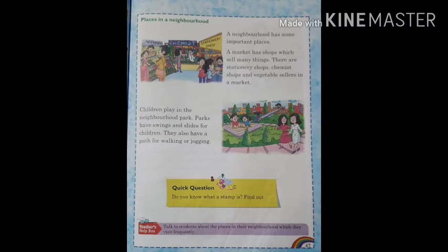Another important place is the park. Children play in the neighborhood park. Parks have swings and slides for children. They also have a path for walking or jogging. Parks भी important हैं। Main road पर walk या jogging नहीं कर सकते क्योंकि वो बहुत ही ज़्यादा busy होती हैं, वहाँ pollution का problem होता है। Parks वगेरा शांत area में होते हैं।